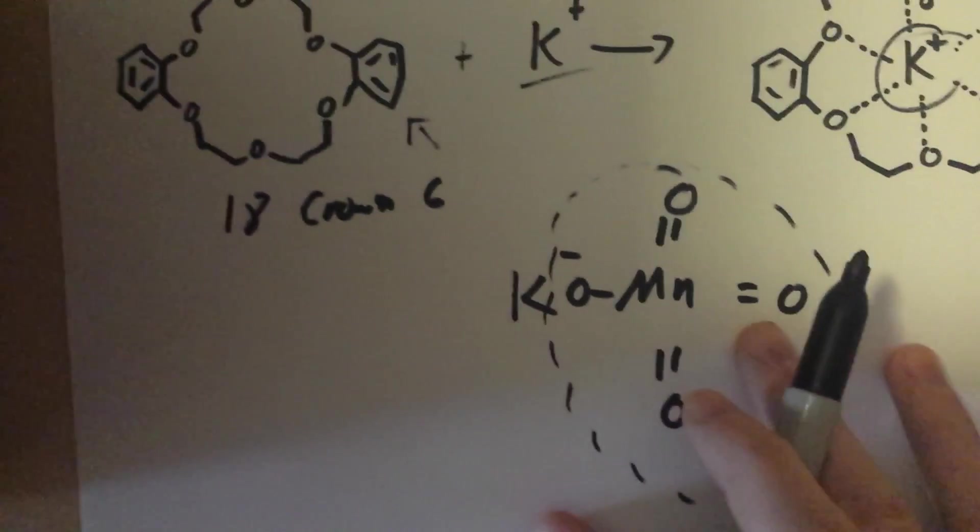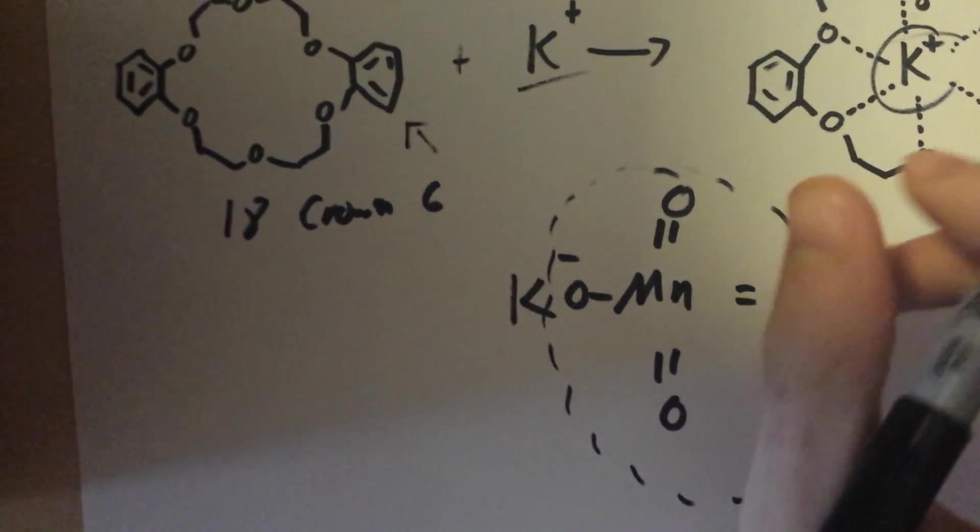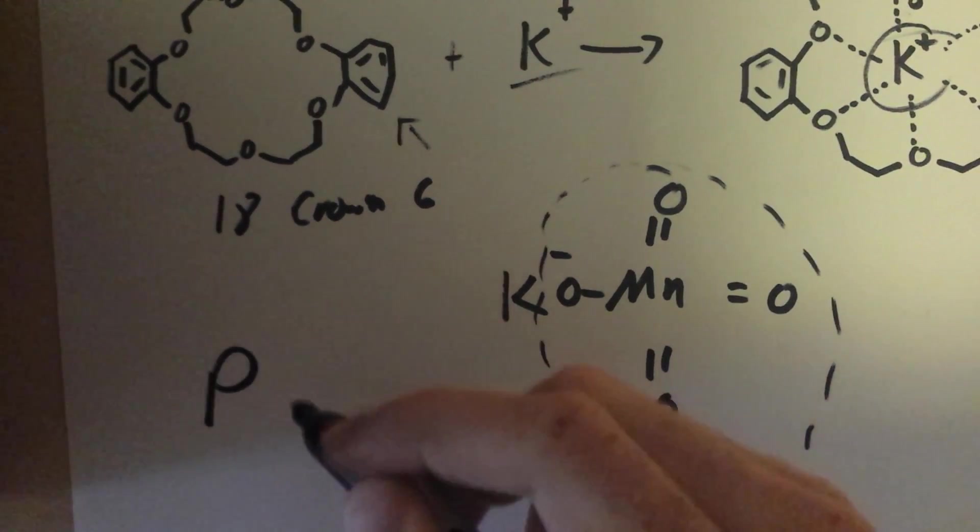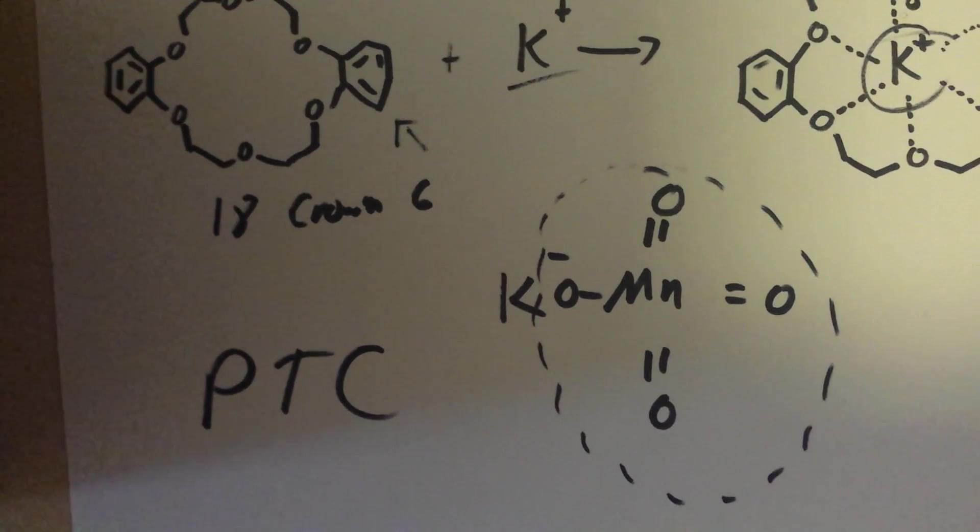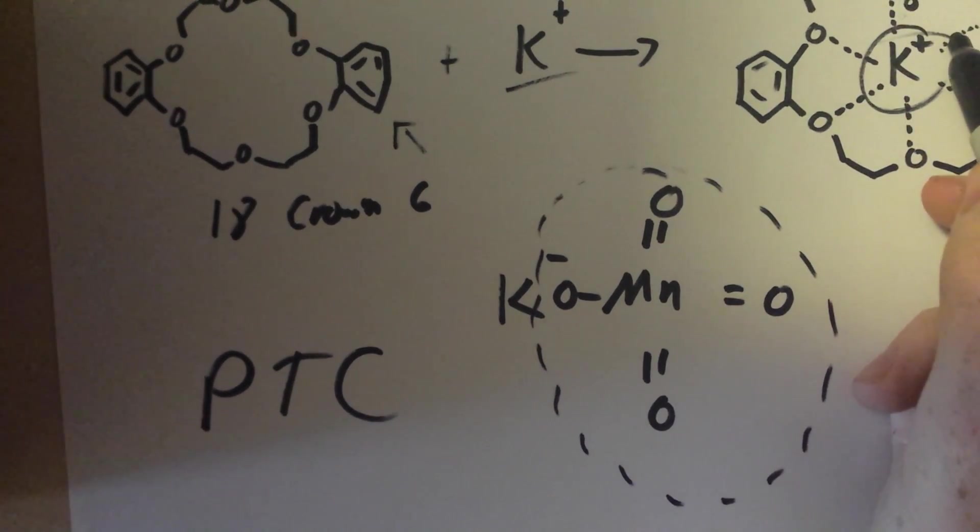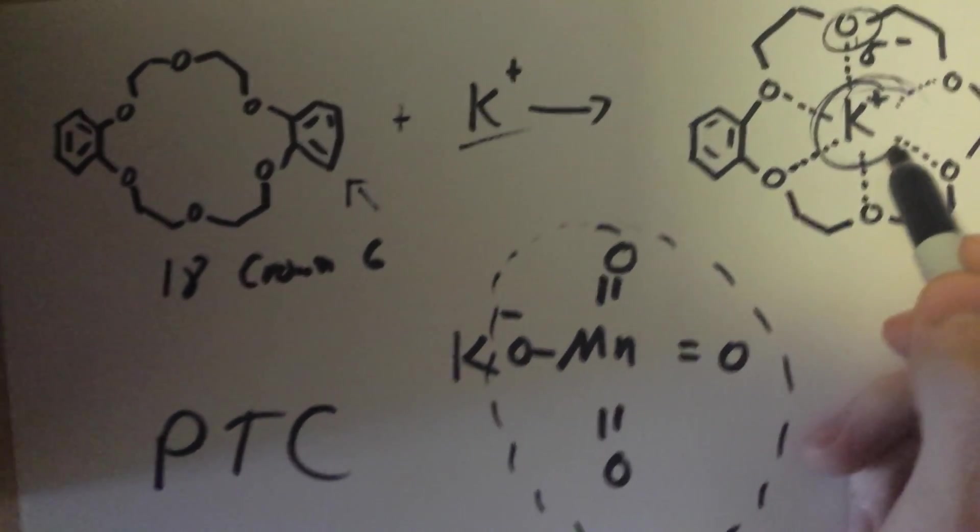So again, recapping, crown ether is able to act as a phase transfer catalyst. They're able to bring insoluble salts into an organic phase, and they do this by binding with positively charged cations.